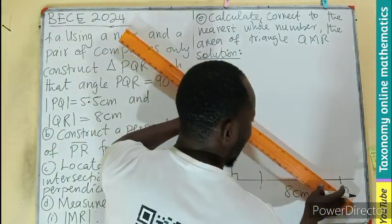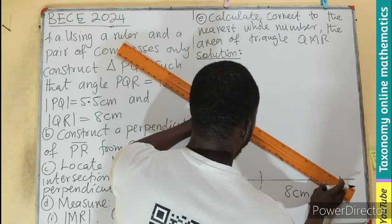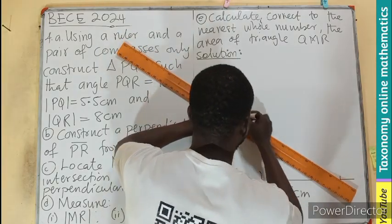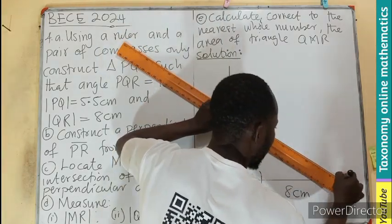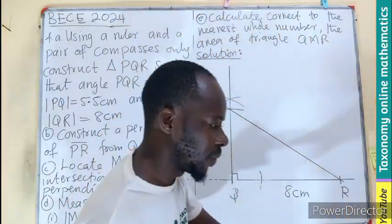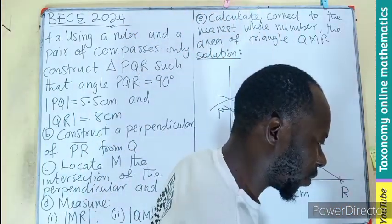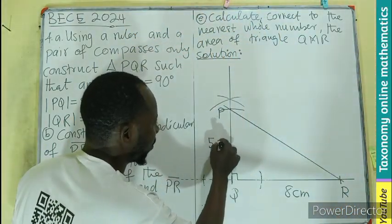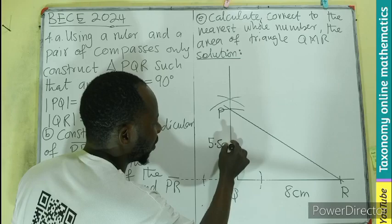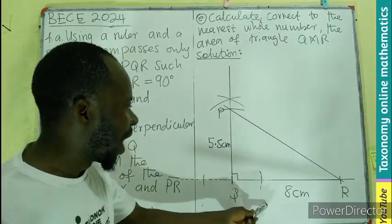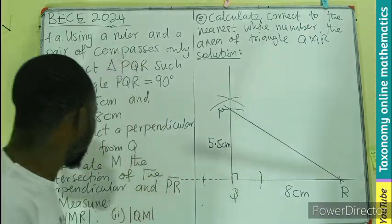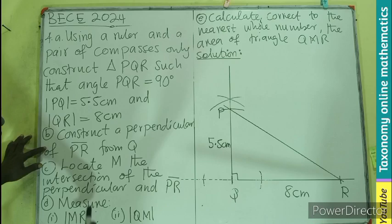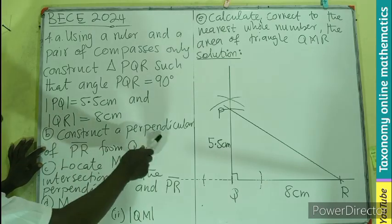Now that we have the arc, our point P is going to be here, so we can complete the triangle by joining the vertices P and R together to form the required triangle. We have our 5.5 centimeters for PQ and our 8 centimeters for QR.